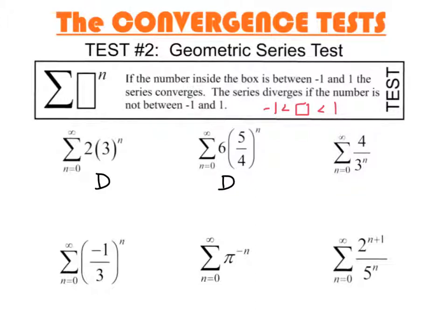In this example, from the previous slide, we rewrote it. If you recall, it was 4 multiplied by 1 third to the n. Well, now the common ratio is 1 third. We can see that with this rewrite: this converges. So again, you might have to do some rewriting to see it.